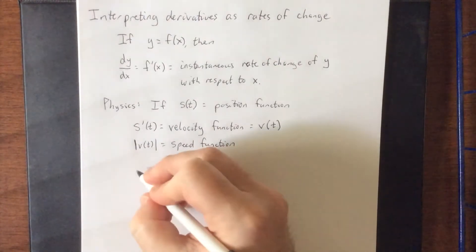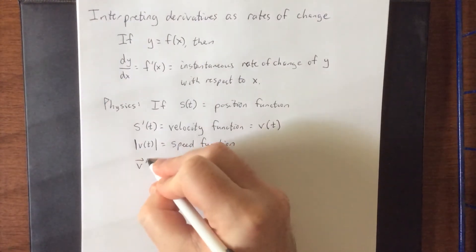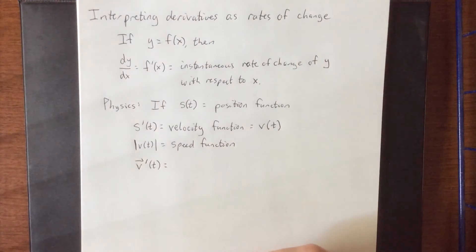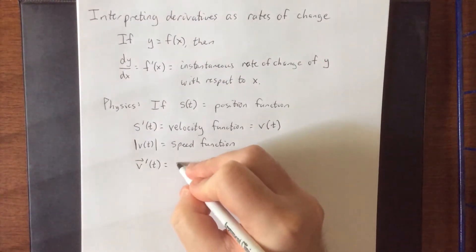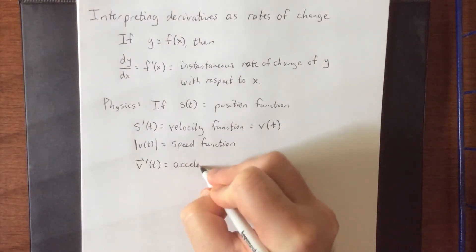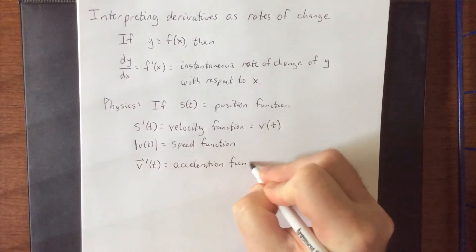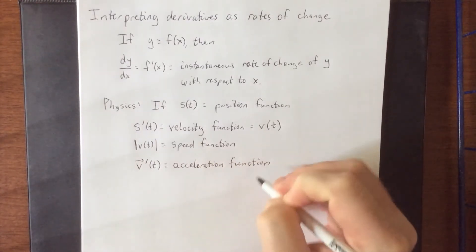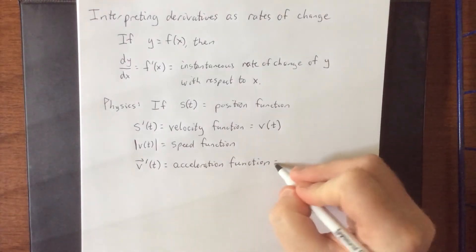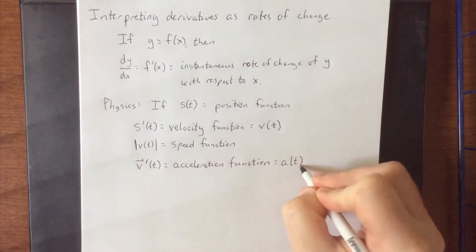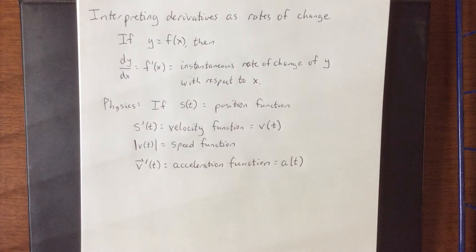However, if we go back here and talk about whether something is speeding up or slowing down, velocity could be increasing or it could be decreasing. This is known as an acceleration function. As something's velocity changes or as an object's velocity changes, we wind up getting a rate of change of velocity over the course of time. That's known as acceleration.